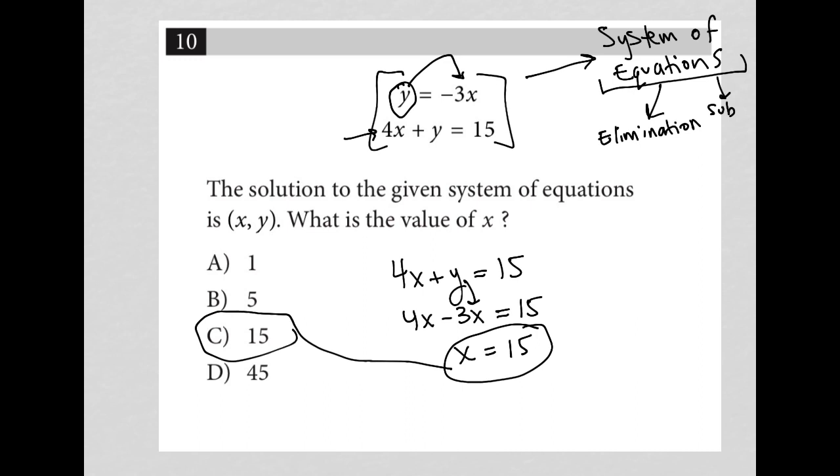If the question had said what is the value of y, I would just plug this 15 into x here. That's the simplest place to put it. And I'd find that 15 times negative 3 is negative 45. And then that would have been the answer if we're solving for y.